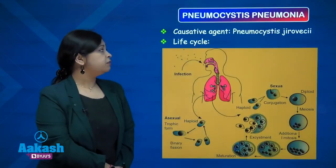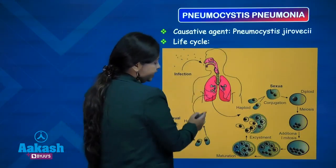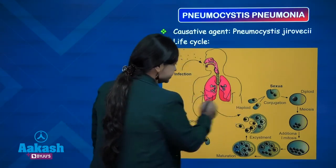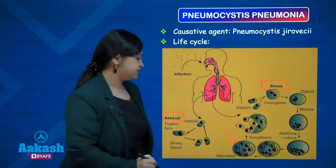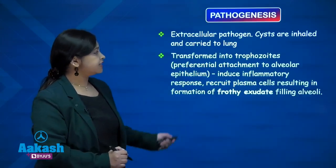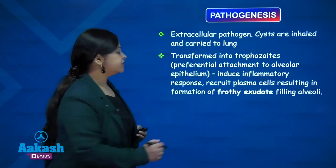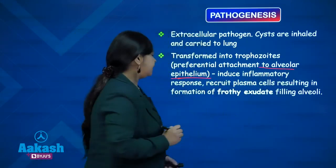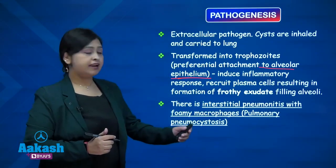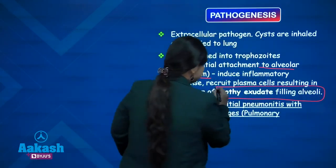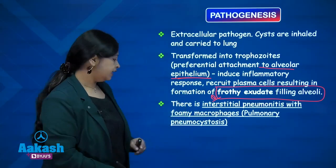Coming to Pneumocystis pneumonia: the causative agent is Pneumocystis jirovecii. Infection occurs by inhalation with asexual and sexual life cycles; the sexual cycle forms cysts with eight intracystic bodies. It is an extracellular pathogen — cysts are inhaled and carried to the lung, transformed into trophozoites with preferential attachment to alveolar epithelium, inducing inflammatory response, recruiting plasma cells resulting in frothy exudate filling the alveoli.